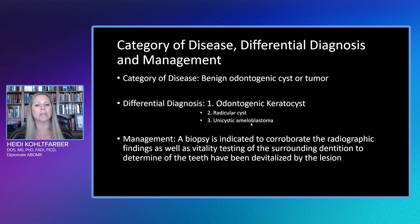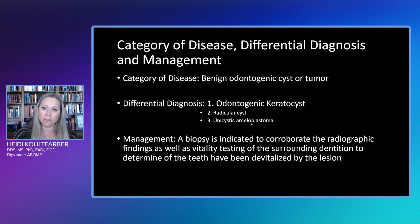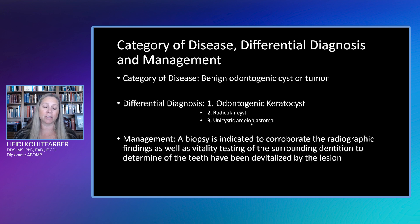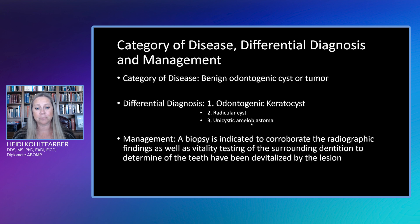Our category of diseases is a benign odontogenic cyst or tumor. Our number one differential would be an odontogenic keratocyst. Number two would be a radicular cyst, but we're not really thinking that because we didn't see surrounding bony sclerosis. Our third differential could be a unicystic ameloblastoma; however, unicystic ameloblastomas tend to resorb roots, and we did not particularly see that. The report would be sent back with management suggestions — we'd say definitely we need a biopsy to corroborate the radiographic findings, and we would request vitality testing of the surrounding teeth to determine if they've been devitalized by the size of the lesion.